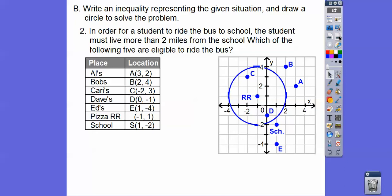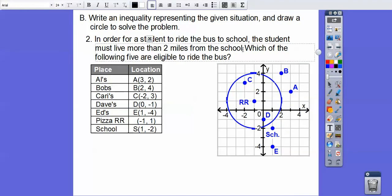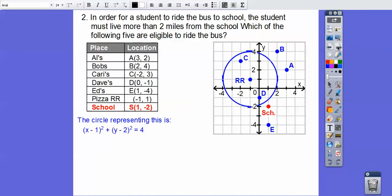Here's the second problem. Same ordered points so we don't have to graph them again. It saves me a whole bunch of time. In order for a student to ride a bus to school, the student must live more than 2 miles from the school. I forgot a period right there. The school, let me put that period in right there. So, the school is right here at (1, -2) and the radius is 2. So, it's going to be greater than 2 squared which is 4. Here's the circles equation right there.